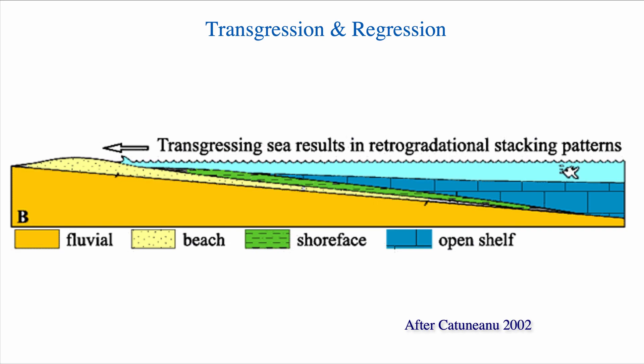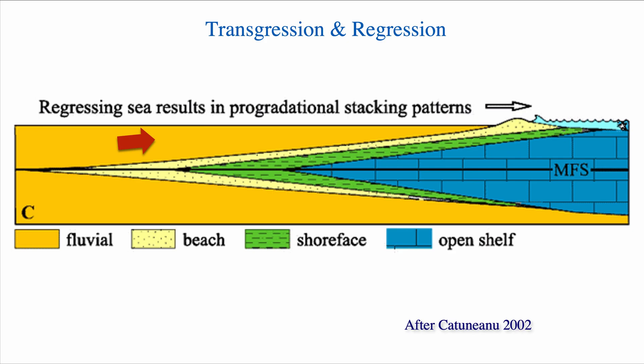Now of course you can also reverse that trend. So say that the rise in base level, the rise in sea level slows down and/or that sedimentation picks up and that you fill accommodation, then what you have is a regression and the sediments are now showing a progradational stacking pattern. By progradational stacking pattern, I mean that the sediments that represent shallower condition, or environment of deposition, now migrate toward the basin.